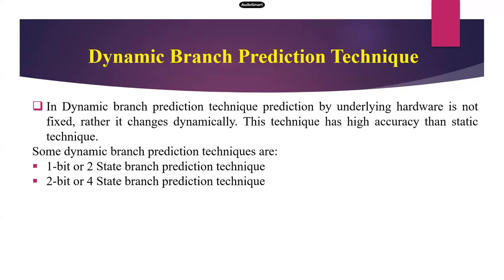Some dynamic branch prediction techniques are: one-bit dynamic branch prediction, or two-state branch prediction technique; and two-bit, or four-state branch prediction technique. We will see them one by one.